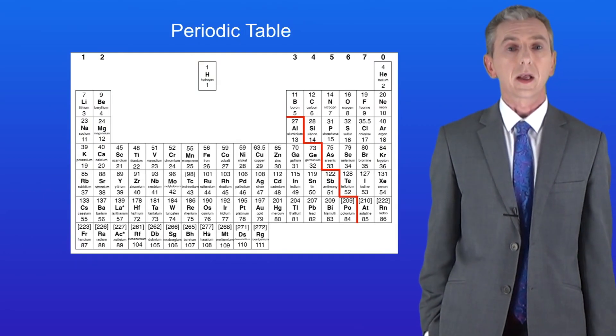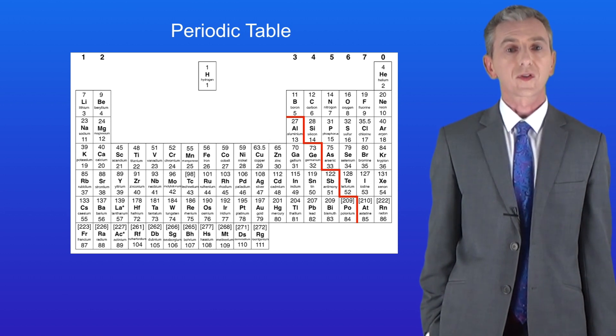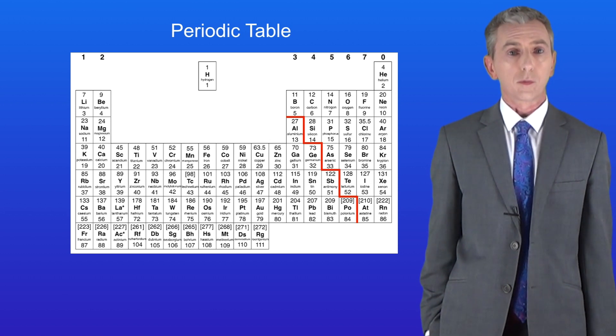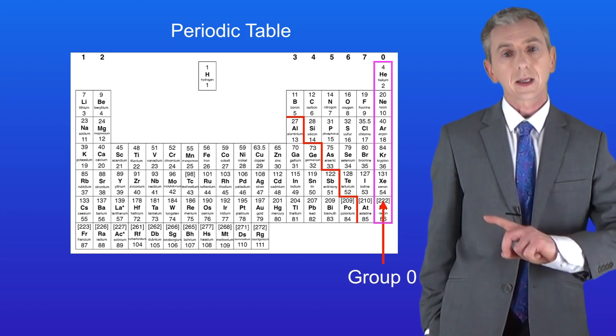We've been looking at the periodic table and in the last video we saw that we can arrange all of the elements into groups with similar chemical properties. Now one really important group is group zero which is also called the noble gases and here they are.